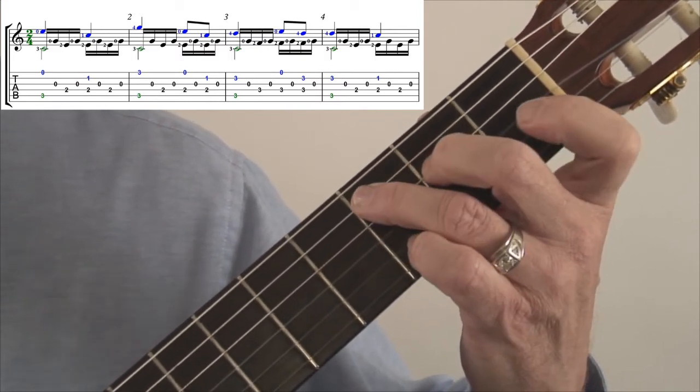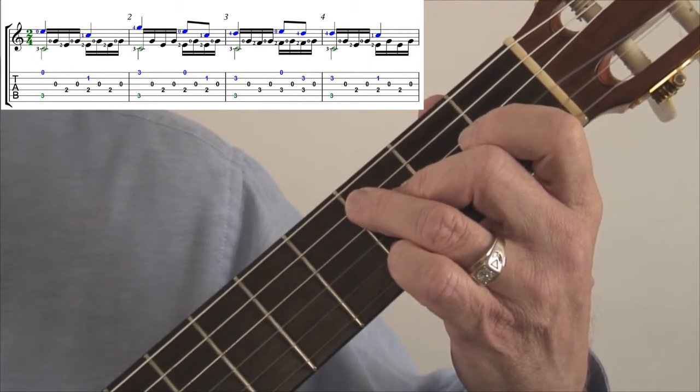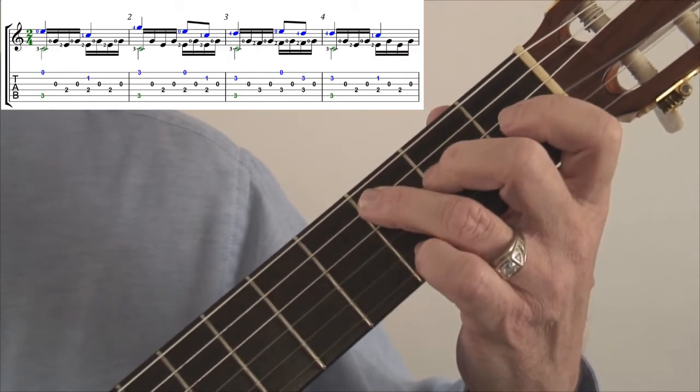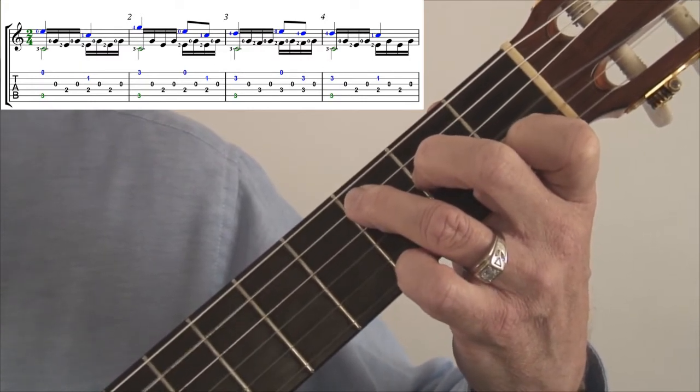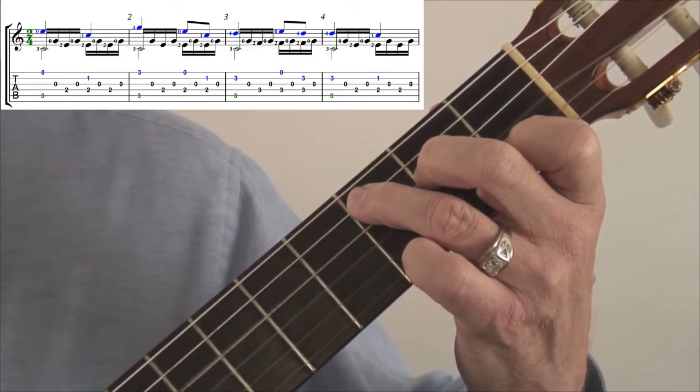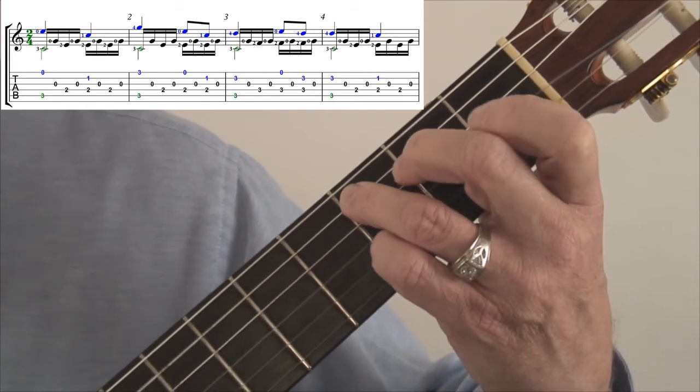Also, there's danger of getting a squeak. And also, it produces a lot of tension in the hand that we don't need. So, again, what you want to do, measure two to measure three on the downbeat, lift one and two.